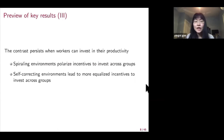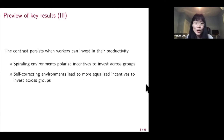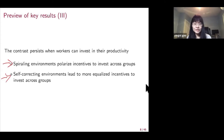This result is consistent with a recent statement on gender salary equity by the Association of Women Surgeons, which claims that disparities women face in compensation at entry level positions lead to a persistent trend of unequal pay for equal work throughout the course of their careers. This result is also consistent with empirical evidence that wage gaps are small at early career stages but wider with labor market experience in certain occupations. We also explore what happens if workers can invest in their productivity before entering the labor market, and show that spiraling environments polarize workers' incentives to invest across different groups, while self-correcting environments lead to more equalized incentives.